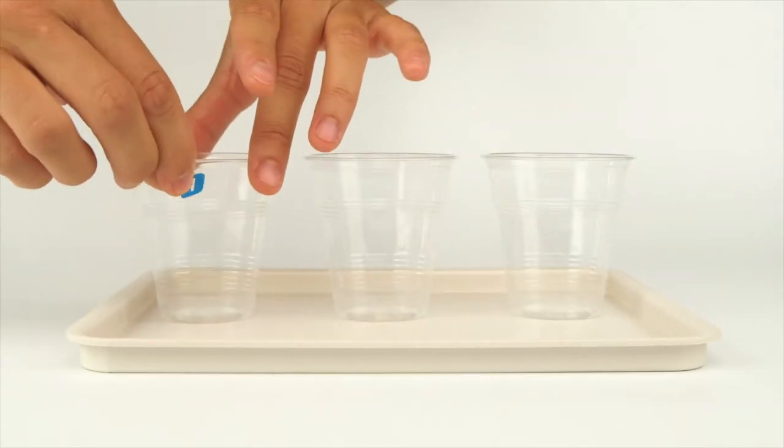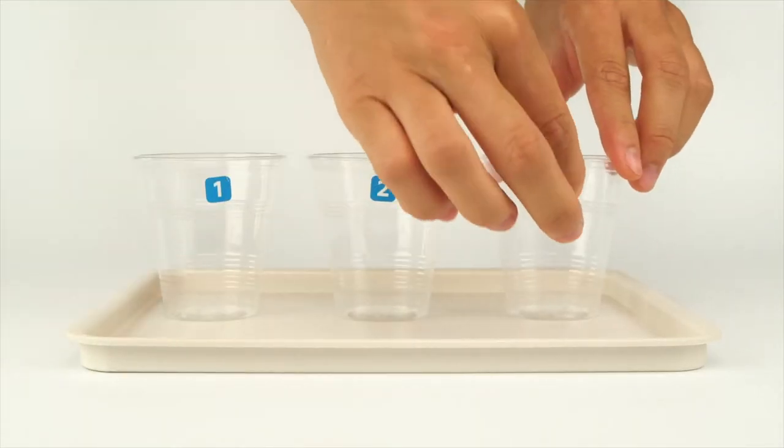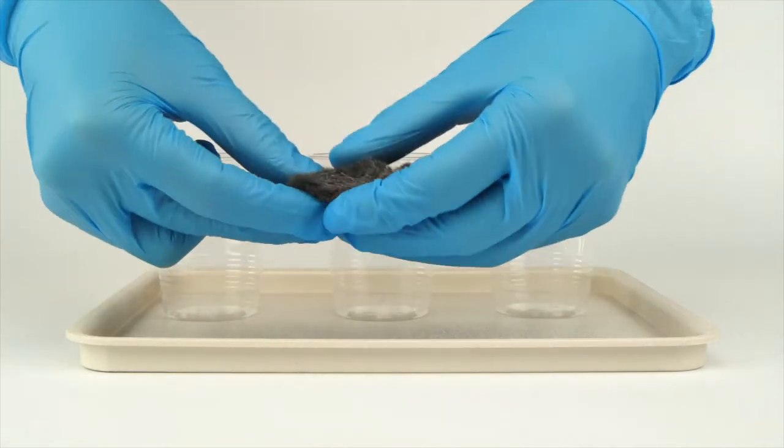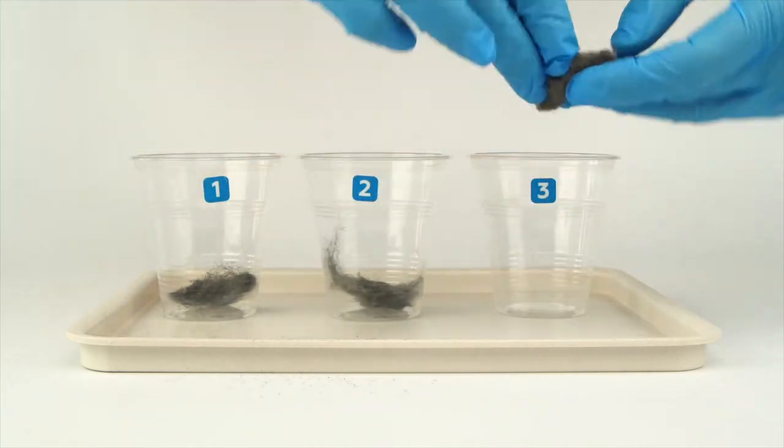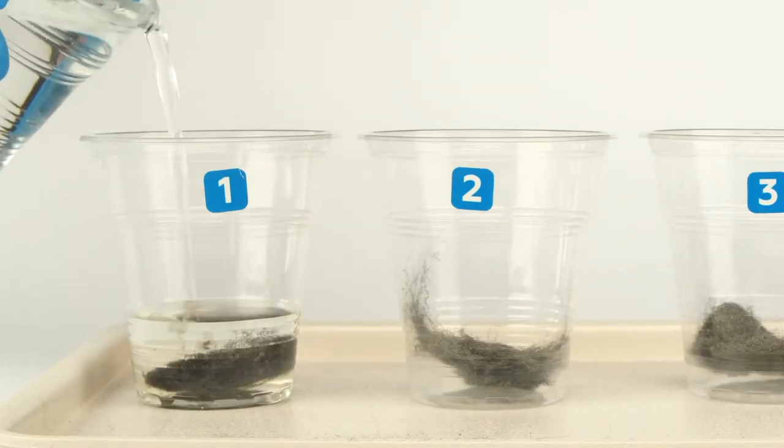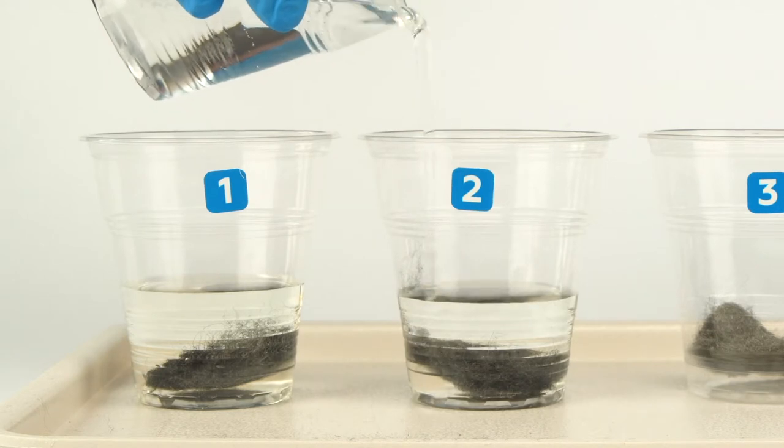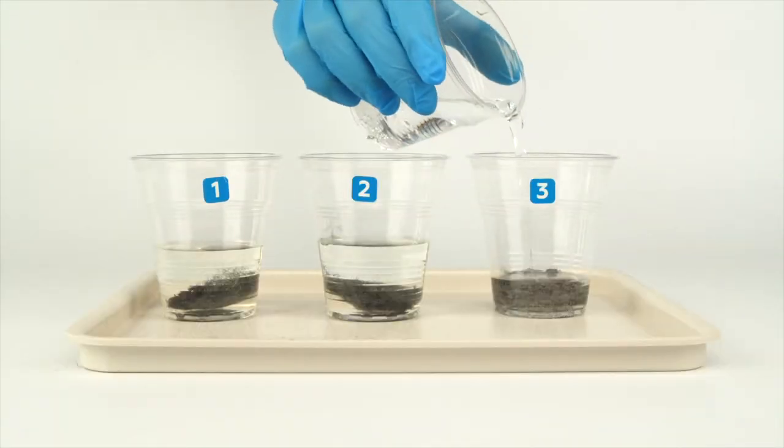Number the three plastic cups using the stickers. Take the iron wool, divide it into three pieces, and put one piece in each cup. Fill the first two cups with still water. Fill the third cup with sparkling water.